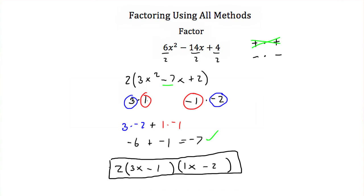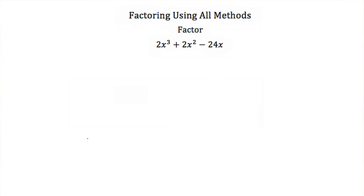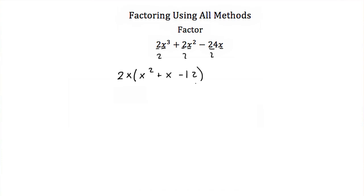Let's try another example: 2x cubed plus 2x squared minus 24x. Right off the bat, I notice there's an x in every term and a factor of 2 in every term, so my greatest common factor is 2x. Factoring out 2x, I'm left with x squared plus x minus 12. Now I look at x squared plus x minus 12 — it doesn't have a greatest common factor and it's not a perfect square, so I'll use binomial factoring.